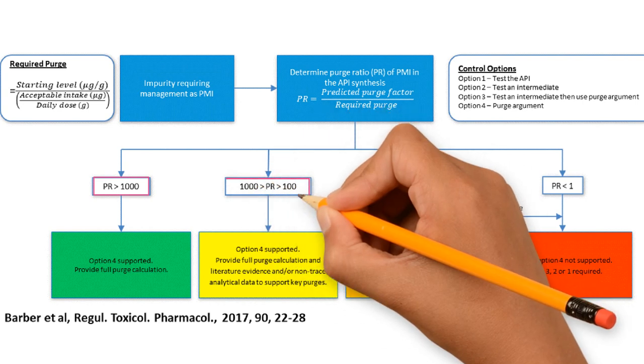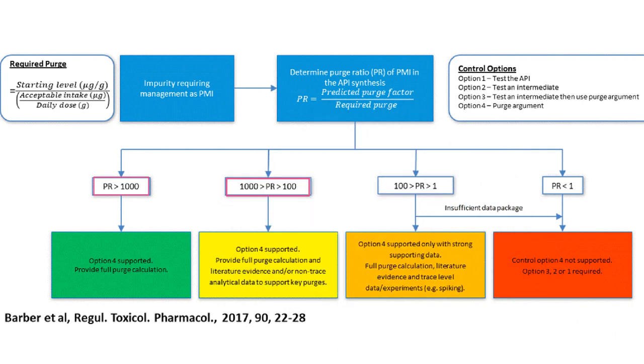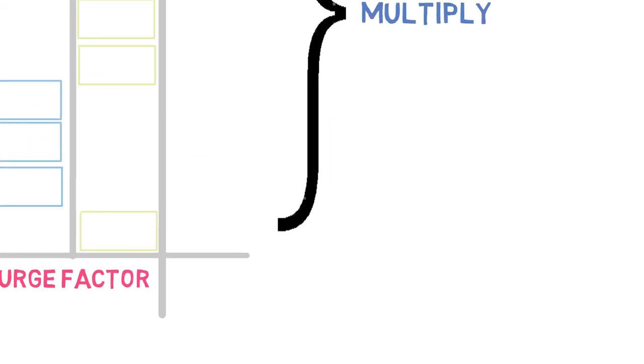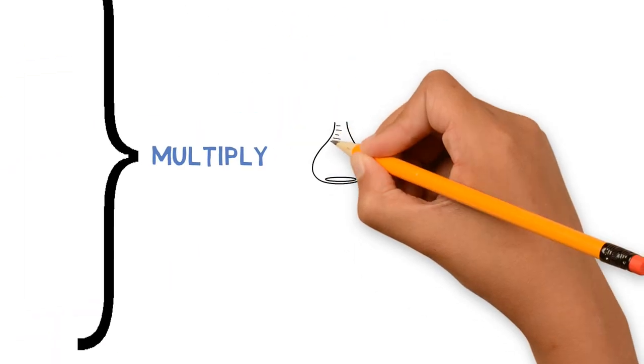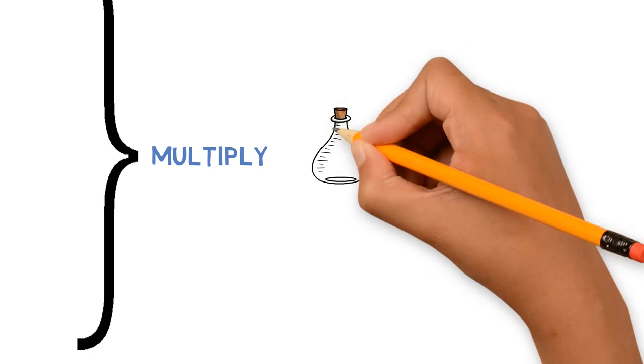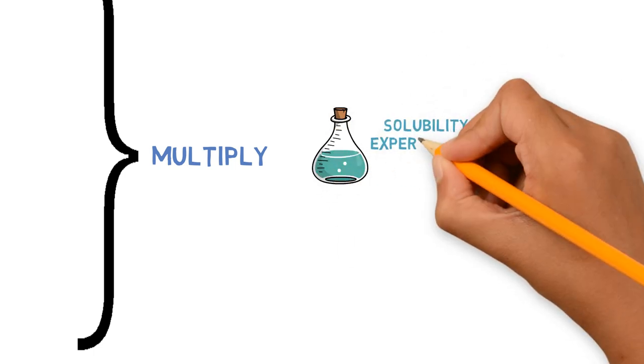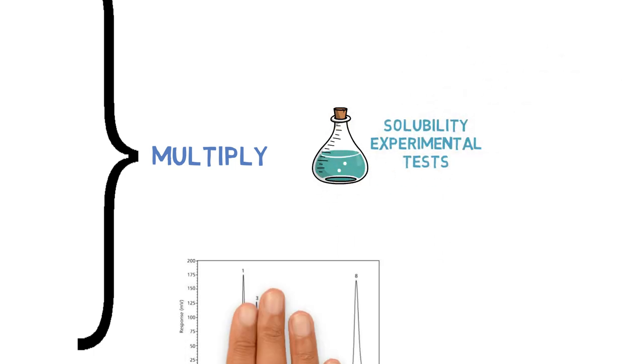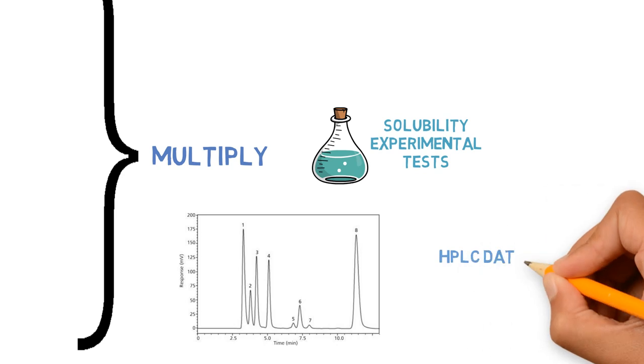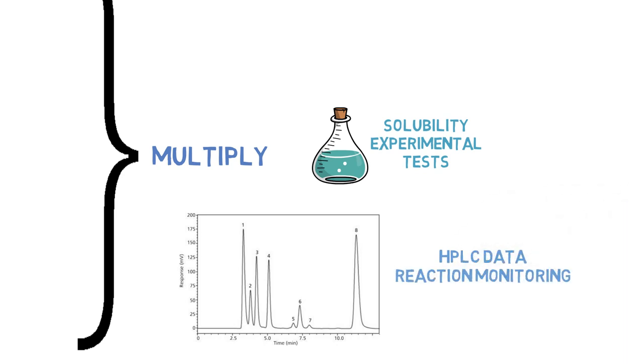If this value is between 100 and 1000, option 4 can also be used, but it would be recommended to present supporting information for key purges or even non-trace analytical data such as solubility measurements or HPLC data from reaction monitoring, for example.